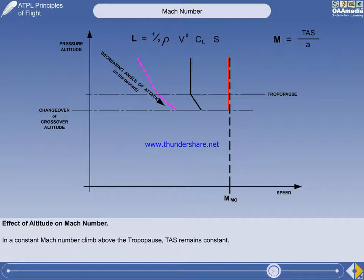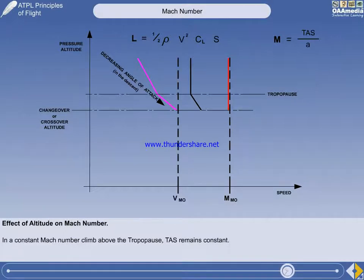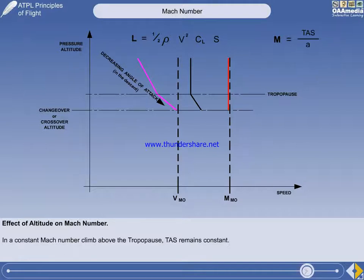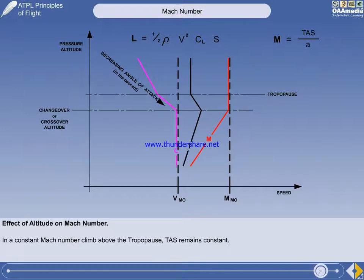As the changeover altitude is approached in the constant Mach number descent, the aircraft is now in danger of exceeding the other maximum operating speed, VMO. VMO is an EAS — the only V-speed that is not a calibrated airspeed. As with MMO, the regulations state VMO may not be deliberately exceeded in any regime of flight — climb, cruise, or descent. So the descent below the changeover altitude is carried out at a constant indicated airspeed, with true airspeed and Mach number both decreasing.